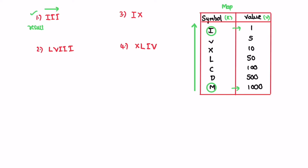Let's create a result variable as an integer and use two pointers: i starting at the first symbol and j at the second. We check if the value at i is greater than or equal to the value at j. Since they are equal we add that symbol's value to result, then increment both i and j. This continues until j goes out of bounds, at which point we exit the loop. Outside the loop, we add the value of the last symbol at index i into our result.